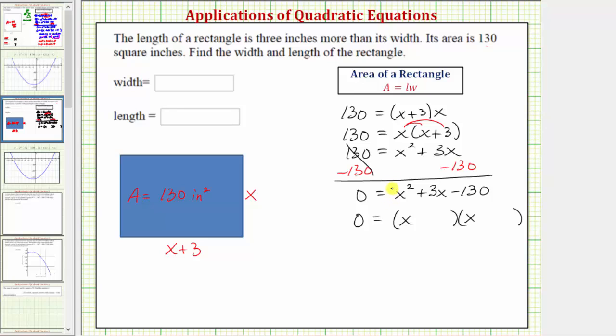Because the leading coefficient is one, the terms in the second positions would be the factors of negative 130 that add to positive three. And because 10 times 13 equals 130, and we're looking for two factors that give us a product of negative 130 and add to positive three, we can use the factors of positive 13 and negative 10.